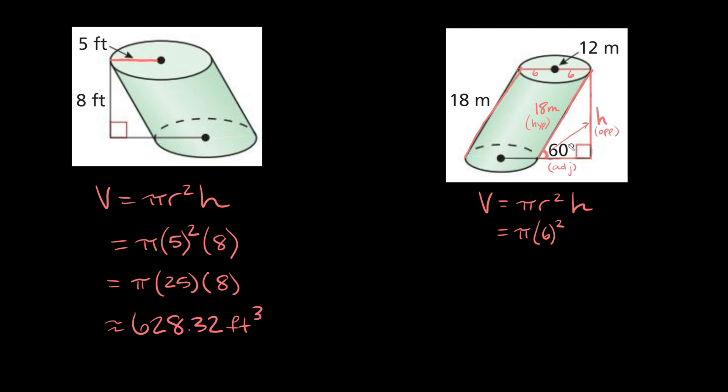So using this angle that we're given, 60 degrees, which trig function do we want to use? Well, we want to use one that relates the opposite side and the hypotenuse, because we're given the hypotenuse and we're trying to solve for the opposite side. So we really don't care about the adjacent side right now. So the trig function that relates the opposite side to the hypotenuse would be sine. Because if you remember your little acronym, SO-CAH-TOA, sine relates the opposite side and the hypotenuse.